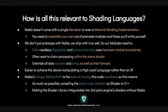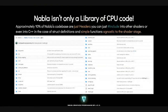Nabla's unique selling point is the ease of reusing code anywhere. This means, as much as possible, we want to be using the same struct definitions between shaders and C++. We even want to make the shader library integratable into third-party engines without using Nabla at all. Approximately 10% of the codebase is just headers of shader structs and methods which you can include into other shaders or even C++ sometimes, as long as you keep your simple functions and remain agnostic to the shader state.